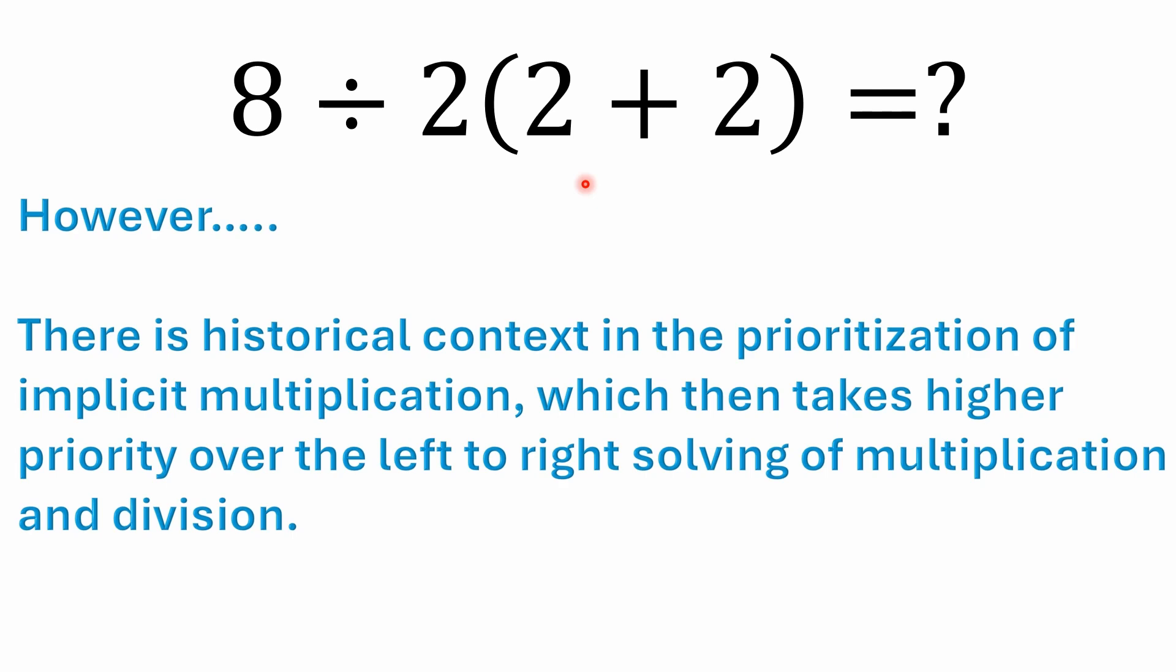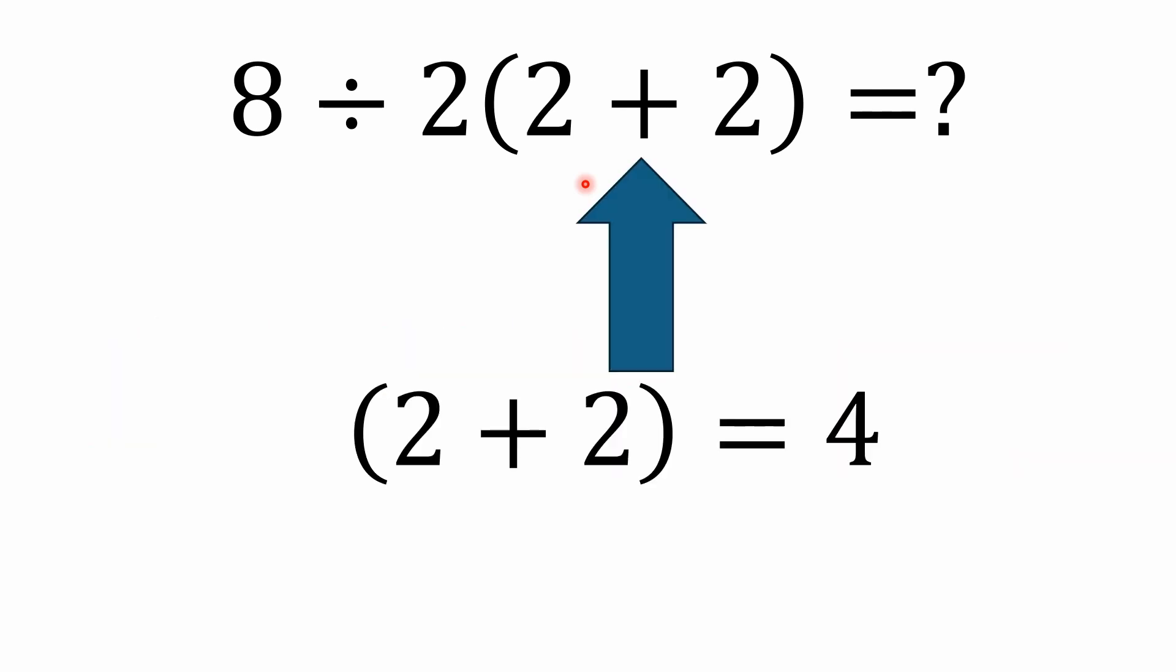Now, there is some historical context for the prioritization of implicit multiplication, which then would take higher priority. If you were solving it that way, you still, no matter what you go by, you would still solve the 2 plus 2 in parentheses first. 2 plus 2 is 4.